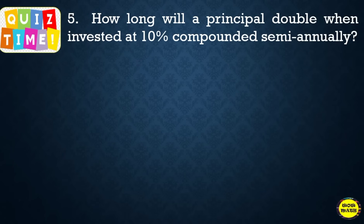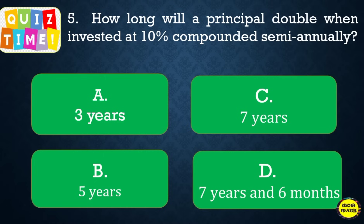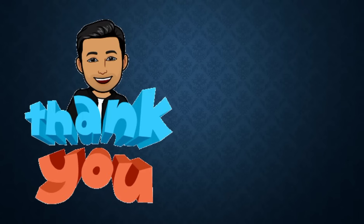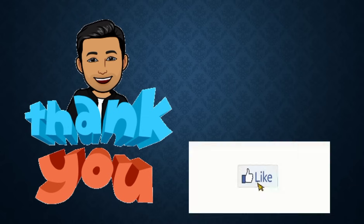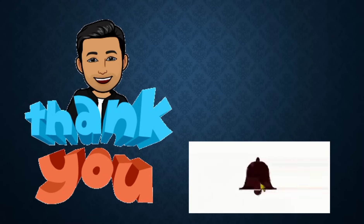Question 5: How long will a principal double when invested at 10% compounded semi-annually? Answer: D, 7 years and 6 months. Congratulations if you got all 5! Share your score in the comments. Thank you for watching — don't forget to like, subscribe, and hit the bell button for more video tutorials from your WowMath channel.